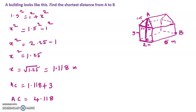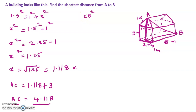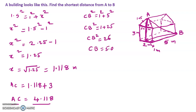Now we got AC. Now we have to find CB. This corner will make another right-angle triangle, with the right angle here. So CB² = 1² + 5² = 1 + 25 = 26. Therefore CB = √26 = 5.099 meters.